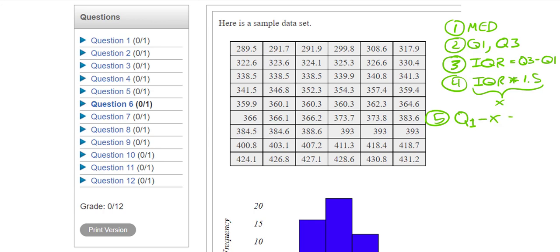Then for step 5 to find your lower fence, you're going to take your Q1 and subtract that value x and this is going to give you the lower fence or the lower boundary. In step 6 you're going to take your Q3 and add that value x, whatever the IQR times 1.5 was, and this is going to give you the upper fence.